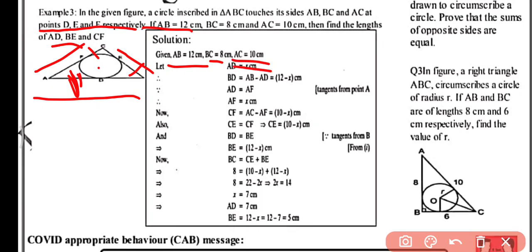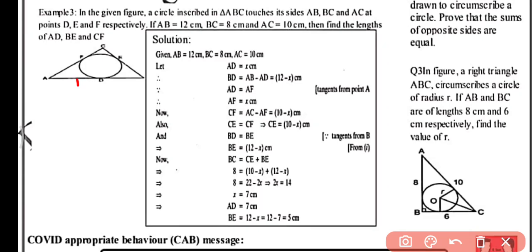Since the length of tangents drawn from an external point to a circle are equal: AD equals AF equals x. Therefore CF equals AC minus AF, that is 10 minus x. Similarly CE equals CF equals 10 minus x, and BE equals BD equals 12 minus x.